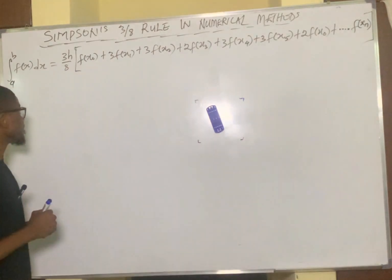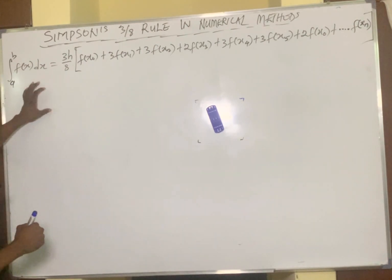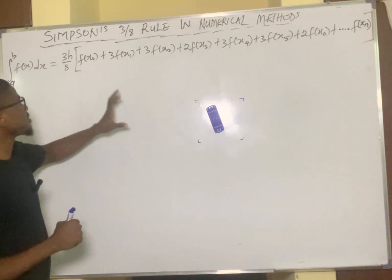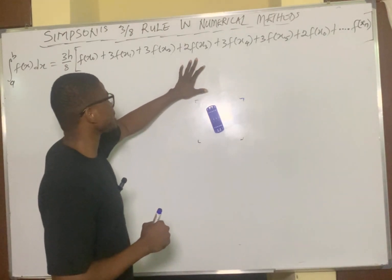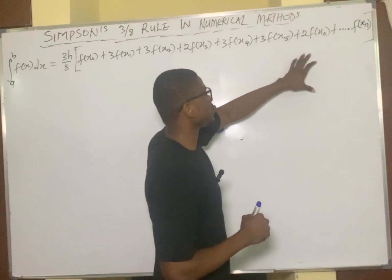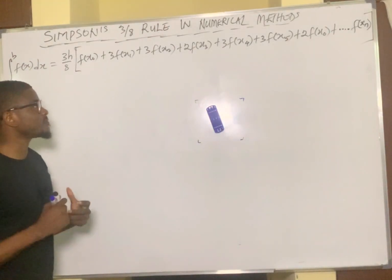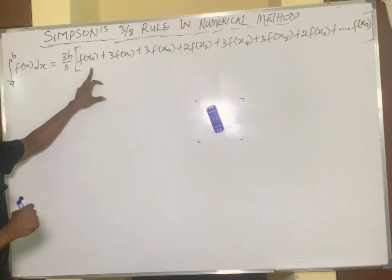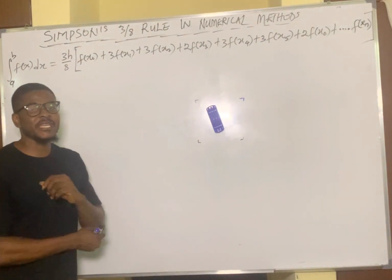By formula, the Simpson's 3/8 rule simply states: the integral from a to b of f(x) dx is equal to 3/8 multiplied by h, multiplying the entire expression f(x₀) plus 3f(x₁) plus 3f(x₂) plus 2f(x₃) plus 3f(x₄) plus 3f(x₅) plus 2f(x₆) and so on up to the last function f(xₙ). Now there is something unique about this formula — the first function in the bracket and the last function f(xₙ) has not been multiplied by any value.